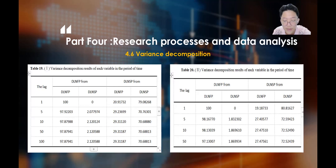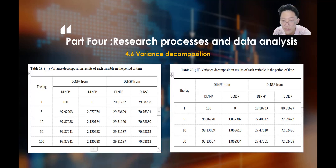According to the variance decomposition results shown in Tables 19 and 20, in the short lag period, the proportion of the futures price affected by the shock from the spot gradually increased from 0% in the first period to 2% in the 100th period. The proportion of the spot price impacted by the futures increased from 20% in the first period to 29% in the 100th period. It can be seen that in a short-cycle environment, the price of the rubber market is more affected by the futures market than the spot market, and the futures market plays a leading role in the price discovery function.